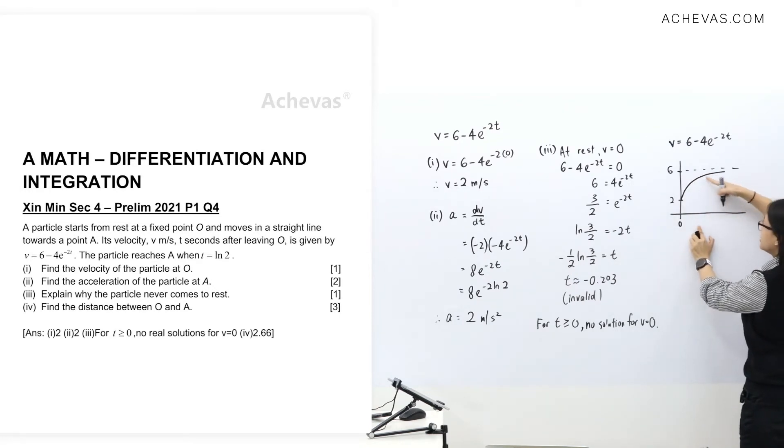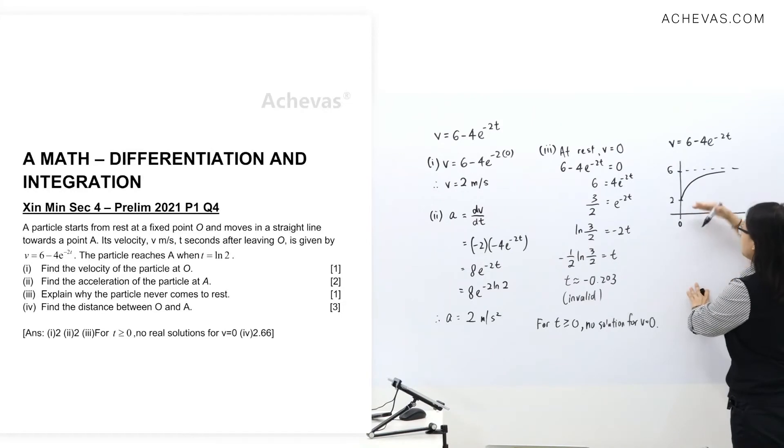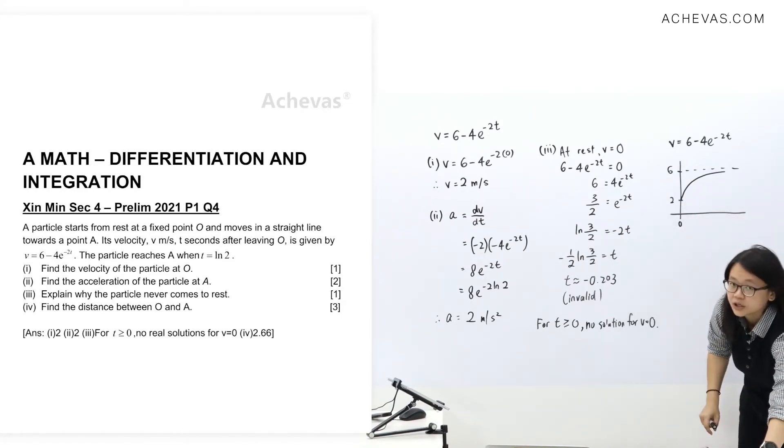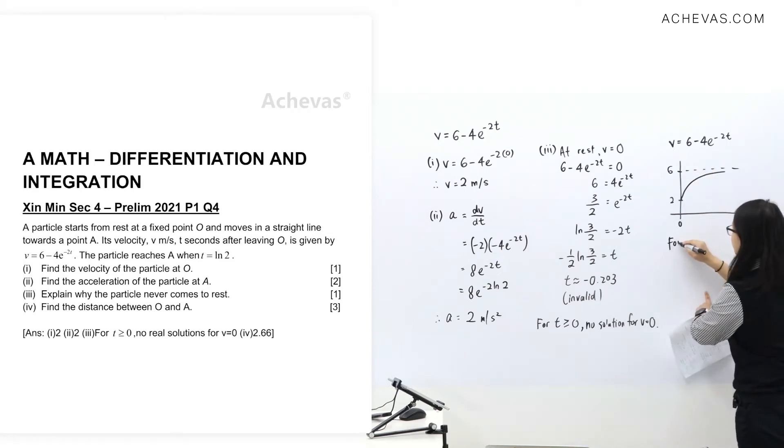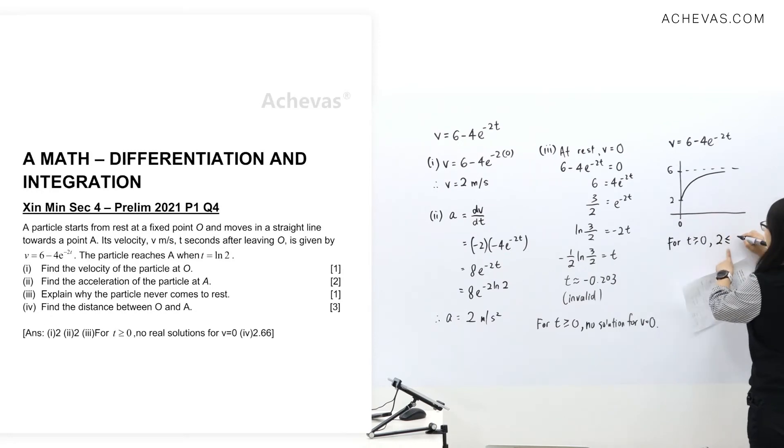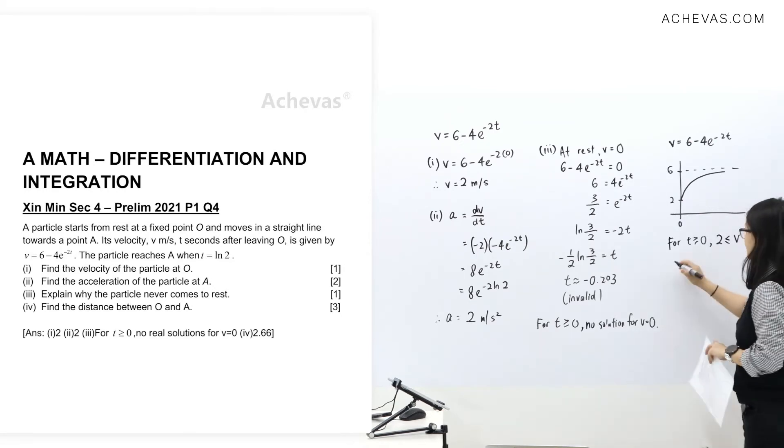You approach the asymptote this way. You'll go nearer to the asymptote. So by graph, we can also say that the velocity only lies between this and this. For T more than equals to 0, the velocity value will lies between 2 and 6. So means V can never be 0. V can never be 0. Therefore, it never come to rest.